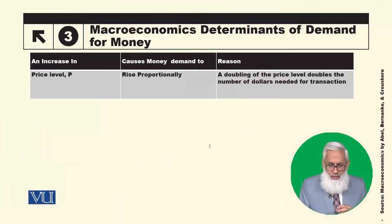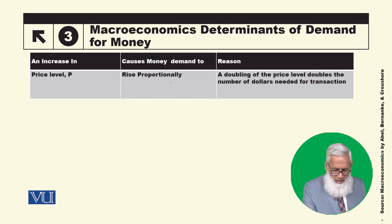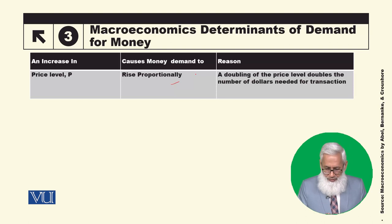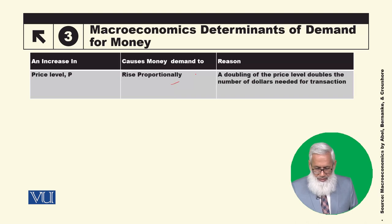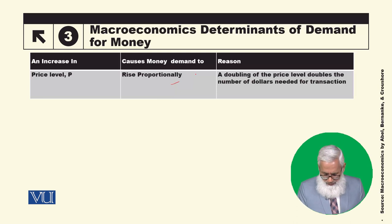अब तक हमने जो factors discuss किए उन्हें summarize करते हैं। पहला — price level: an increase in price level के नतीजे में money demand proportionally increase करेगा। जिस ratio से price level increase होगा उसी ratio से money demand increase होगी। For example, doubling of the price level doubles the number of dollars needed for transactions — जो चीज़ें 100 रुपए में मिलती थीं वो अब 200 में मिलेंगी, तो money demand 100 से बढ़कर 200 हो जाएगी।